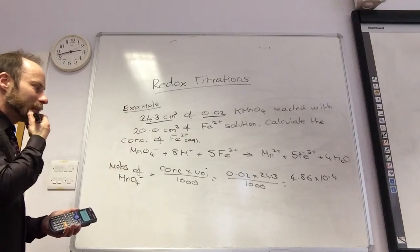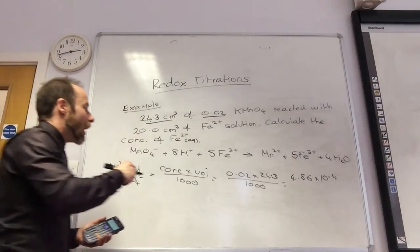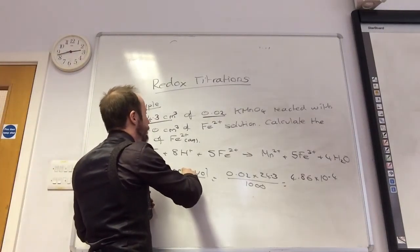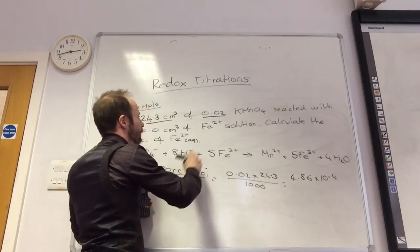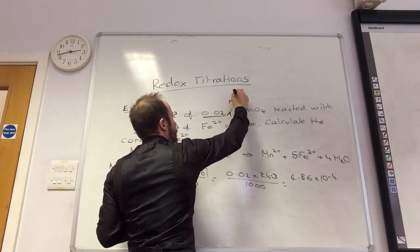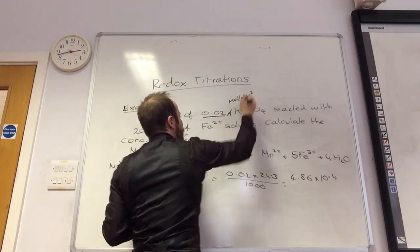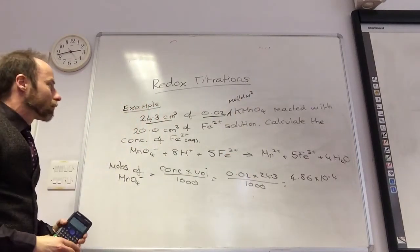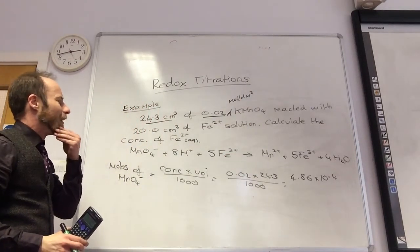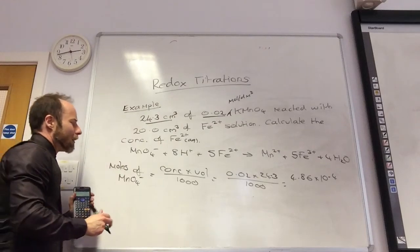If it's in centimetre cubed, why don't you have to divide by... Because my concentration is in moles per decimetre cubed. I should have put that, sorry. That's moles per decimetre cubed. So in the example you've got KMnO4, but we're saying it's the moles of MnO4 minus.